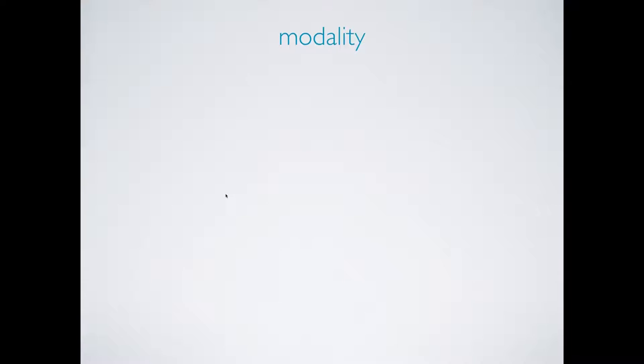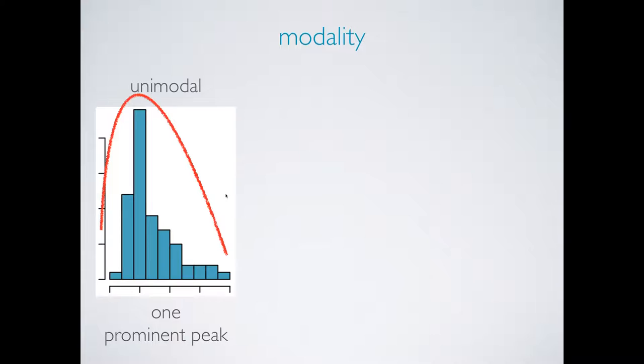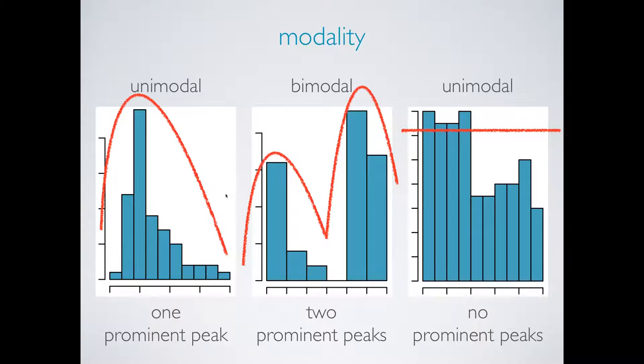Another important aspect of shape is modality. A distribution might be unimodal with one prominent peak, bimodal with two prominent peaks, or uniform with no prominent peaks. With more than two prominent peaks, a distribution is usually said to be multimodal.